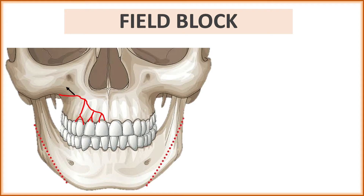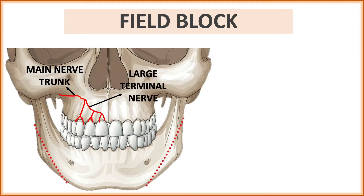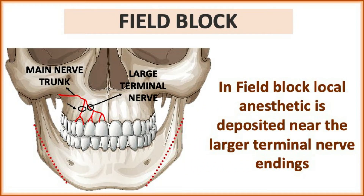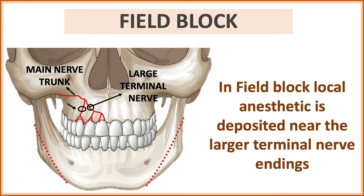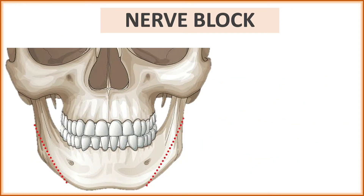The next one is the field block. We have a main nerve trunk divided into two large terminal nerves. In a field block, the local anesthetic is given near the large terminal nerve endings, whereas in local infiltration we infiltrate the sub-branches of the large terminal nerve.